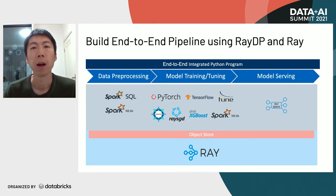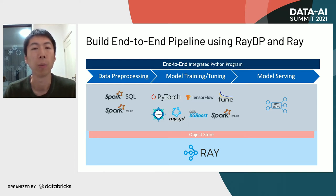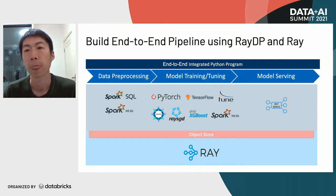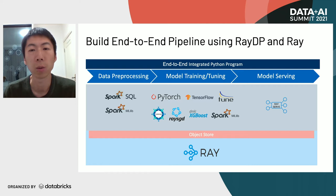With Ray as a single substrate, by using RayDP to run Spark on Ray together with other frameworks and libraries on Ray, we can easily implement an end-to-end pipeline in a single Python program. We can also utilize Ray's in-memory object store for efficient data exchange between libraries. In a typical end-to-end pipeline, we can use Spark SQL to read data and use the DataFrame API for data preprocessing, use Spark MLlib for feature engineering, then store the output in Ray's in-memory object store in Arrow format. Next, we can use any deep learning or machine learning framework — PyTorch, TensorFlow, Horovod, RaySGD, XGBoost, or Spark MLlib — for model training, integrate with RayTune for hyperparameter tuning, and use Ray Serve for model serving.